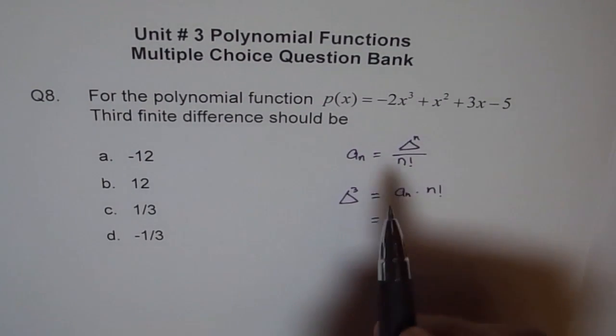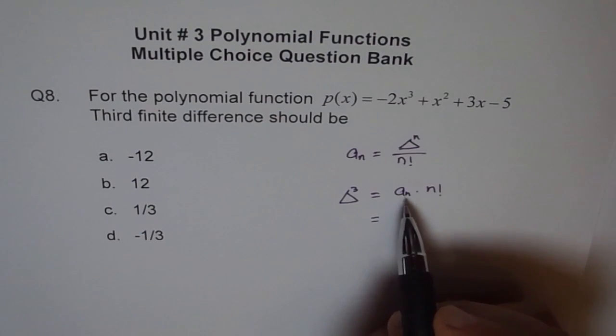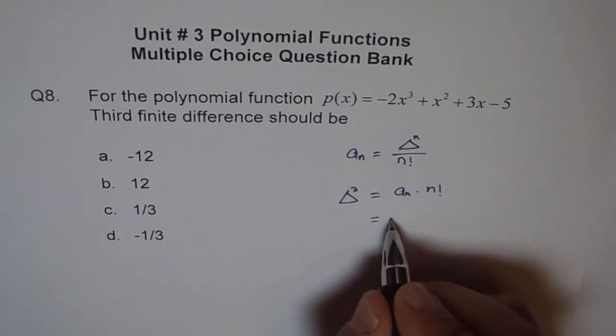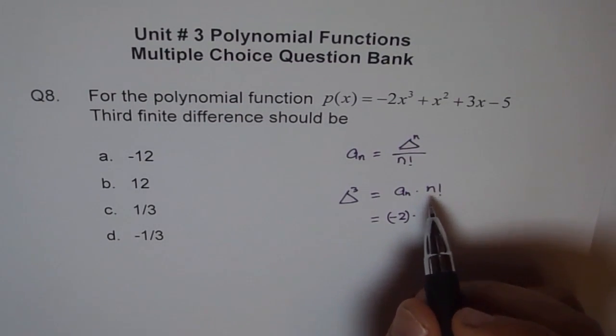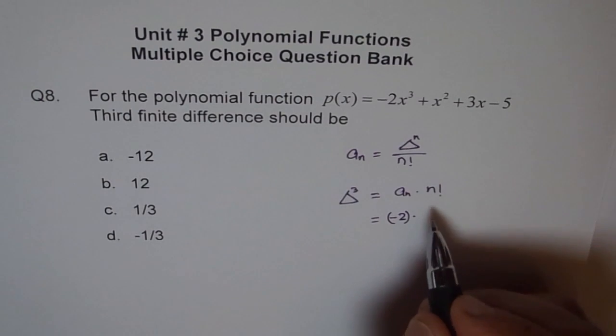Now from our equation, what is the leading coefficient? The leading coefficient is -2. So it is -2 times, and n factorial means the degree. The degree is 3, 3 factorial.